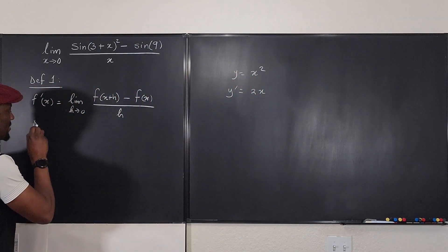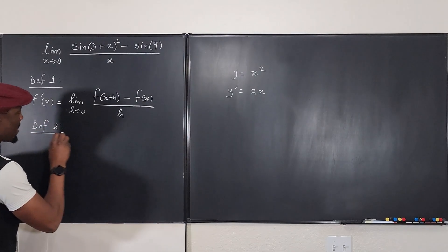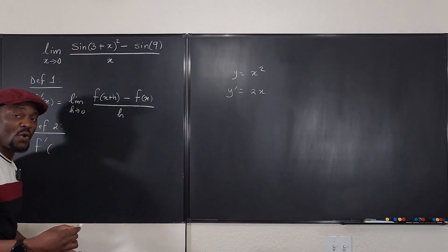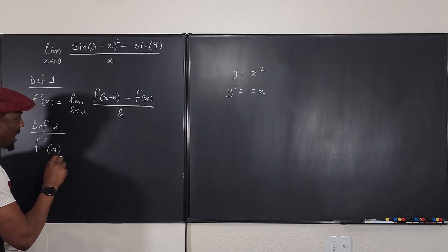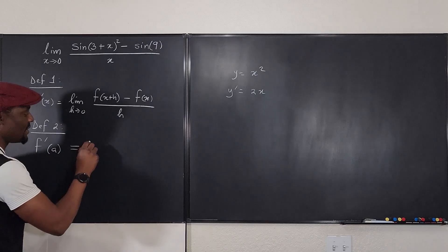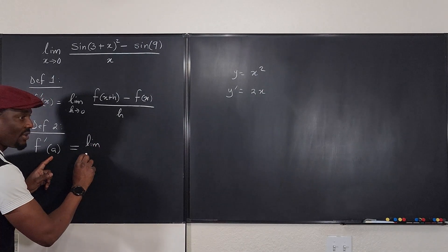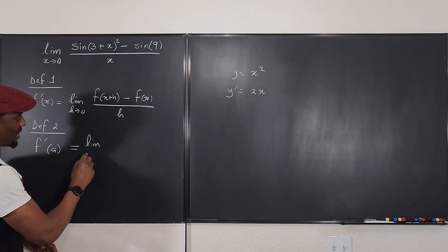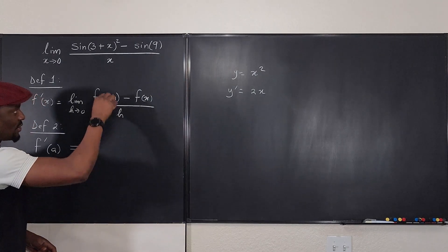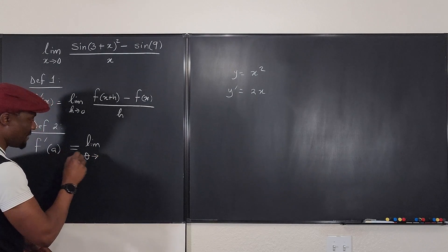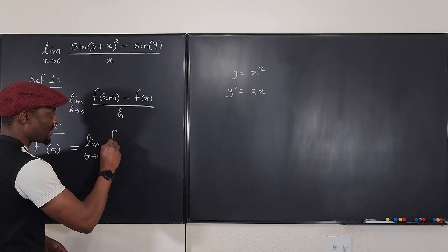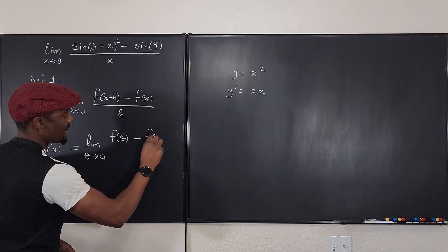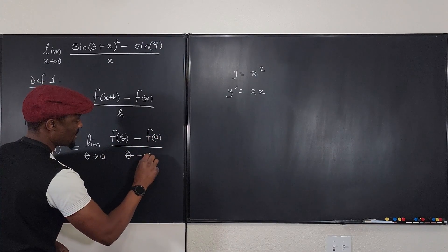The second definition, definition two, is that you're not just looking for f prime of x. You're looking for f prime of x at a particular or a given number. So let's say the value is a. Well, the definition of this derivative is the limit as... Now, I'm going to not use x this time. I'm going to use theta. I'm going to say as theta approaches the given number a